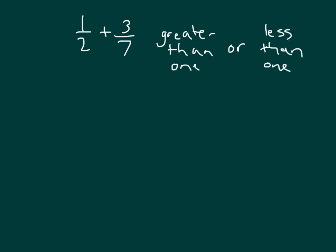Here we have a new problem. We have one-half plus three-sevenths, and we're asked whether or not this is greater than one or less than one. Even drawing a number line, it may or may not be accurate to determine whether this is bigger than one or less than one. The key is whether three-sevenths is bigger or smaller than a half. Because if it was bigger than a half, then we would know that the sum of it with a half would be greater than one.